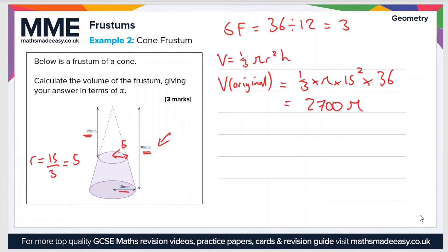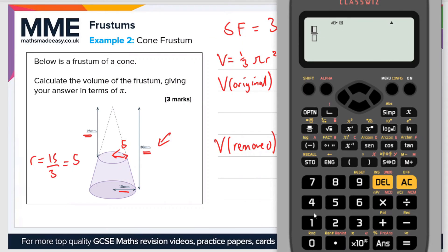That's the volume of the original cone. Now let's work out the volume of the cone that's been removed — V_removed. The formula is the same: one-third π r² h. In this case we use the smaller radius of 5, so that's 5 squared, and the height of the smaller cone is 12. Plugging that into the calculator — one-third times π times 5 squared times 12 — gives us 100π.